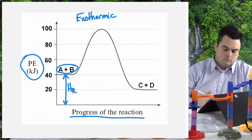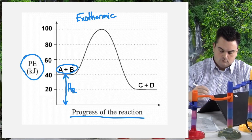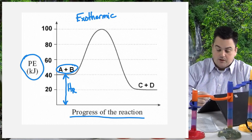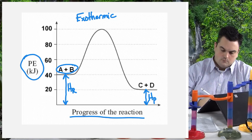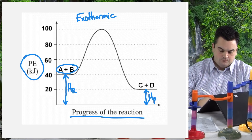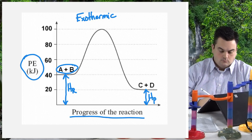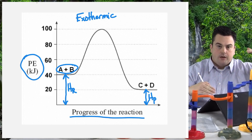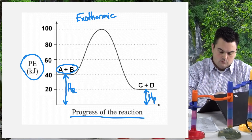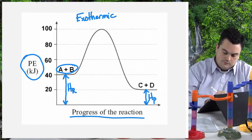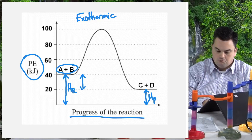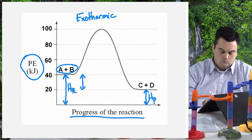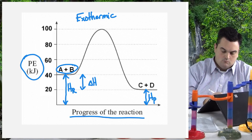The heat of products, HP, goes from zero up to where the products C and D end — that's 20 kJ, labeled H sub P. The overall energy change, delta H, is the region between the reactants and products on the y-axis. Final minus initial: 20 minus 40 equals negative 20 kJ — negative because this is an exothermic reaction. We label that delta H negative to remind us it's exothermic.